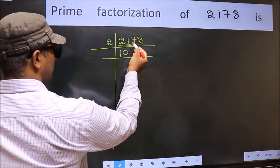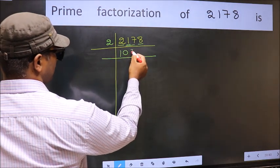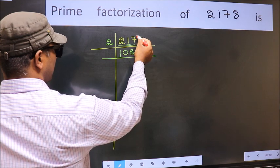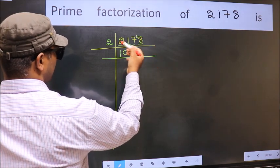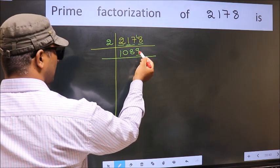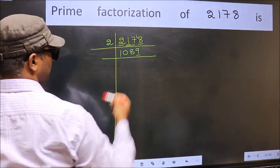Now 17, a number close to 17 in 2 table is 2, 8 is 16. 17 minus 16, 1, 1 carried forward 18. When do we get 18 in 2 table? 2, 9 is 18. Now the last digit 9, not even, so not divisible by 2.